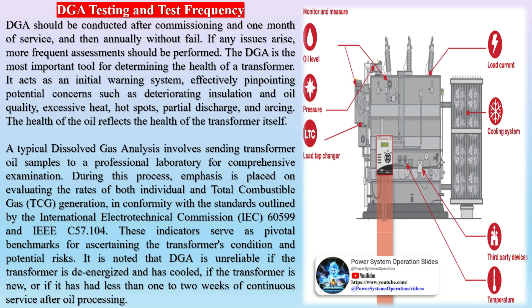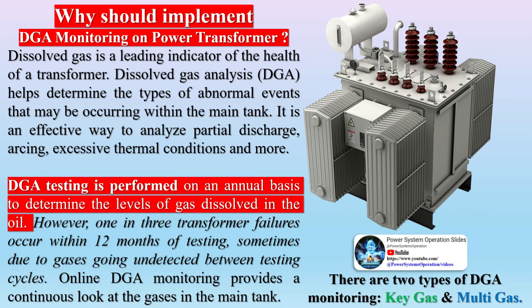To determine the risk of unexpected failure, it's important to consider the consequences and the probability of failure occurring. About one out of every 200 transformers fails each year according to the Seiger transformer reliability survey. According to another study, major failures cost about $14,000 per MVA in property damage. It is safe to say that unexpected failure can be costly.